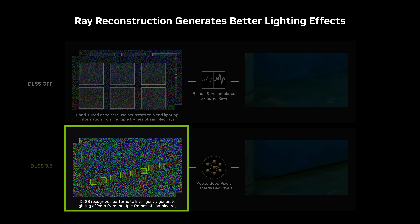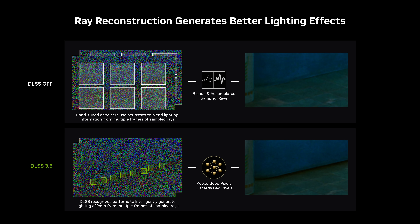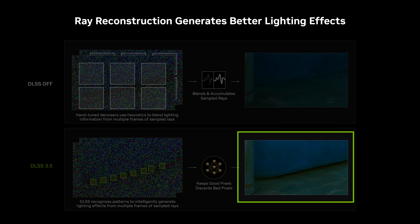The AI then recognizes certain patterns that correspond to effects such as global illumination, and uses information from its training process in order to reconstruct a more realistic and dynamic image.